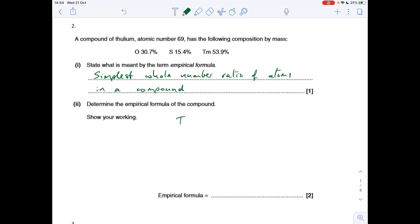So the first thing I'm going to do is knock up a table for the three atoms. So we've got Tm, S and O. So I construct a table. The first thing we do is enter the masses or the percentages in this case. So 53.9 for Tm, S is 15.4 and 30.7 for the oxygen. We're then going to divide by their relative atomic masses. So that's 168.9 from the data sheet, 32.1 and 16.